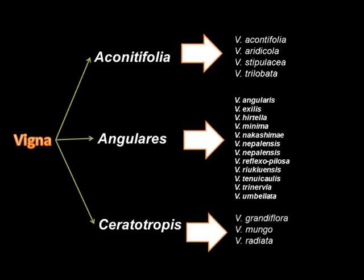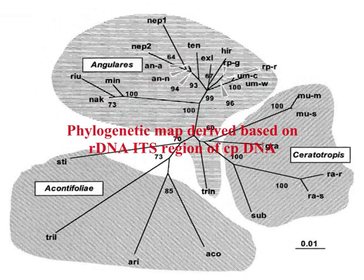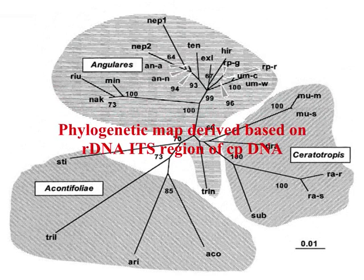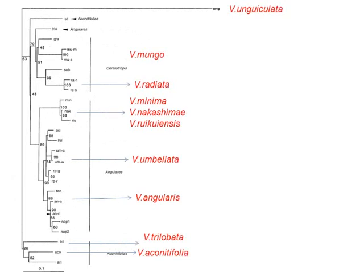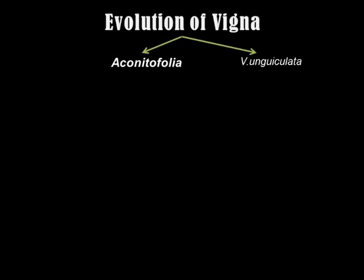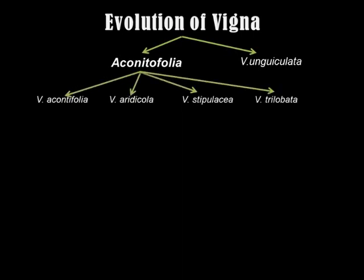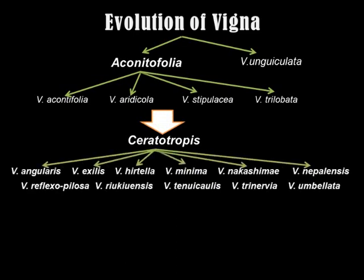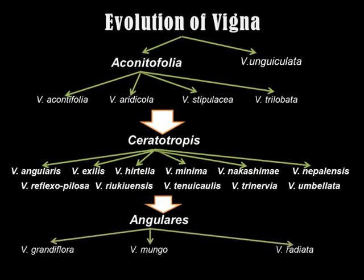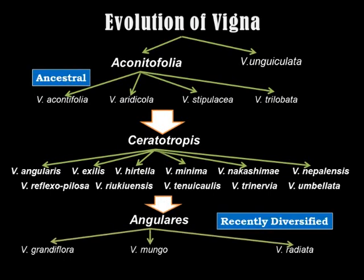A rooted phylogenetic tree was constructed based on rDNA ITS sequence data, including Vigna angulata as an outgroup species. From this phylogenetic analysis, aconitifolia is the most ancestral group of Vigna, in which the species evolved earlier, and angularis is the most recently diversified and evolved section of Vigna.